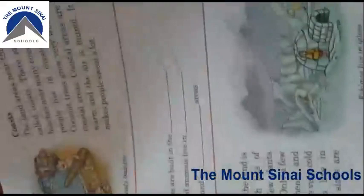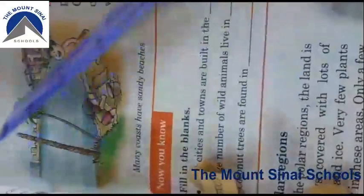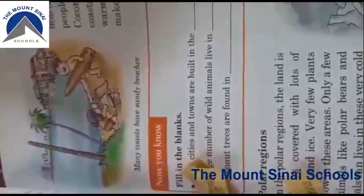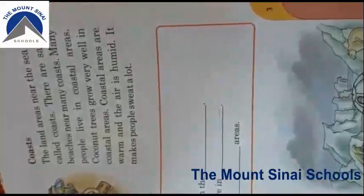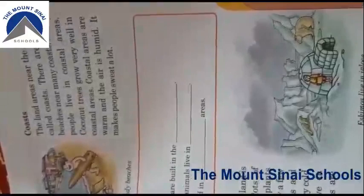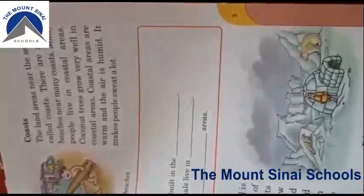On page number three there are coasts. Coasts are the areas that are around the ocean or the sea, where people go for picnics or visit the beach areas. The land areas near the sea are called the coast. There are sandy beaches near many coasts, and many people live in coastal areas. The air is warm and humid — meaning the water content or humidity is much higher in those areas compared to plain areas, forests, or deserts.